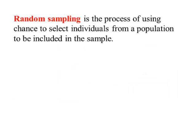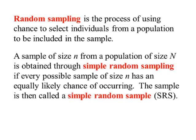We'll begin with what's called random sampling. Random sampling is the process of using chance to select individuals from a population to be included in the sample. A simple random sample is a sample of size n taken from a population where every possible sample of size n has an equal chance of occurring. We abbreviate this SRS.